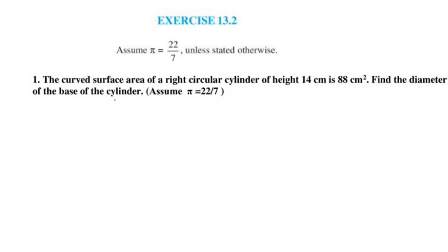First question: the curved surface area of a right circular cylinder of height 14 cm is 88 cm². Find the diameter of the base of the cylinder. Assume pi is equal to 22 by 7.